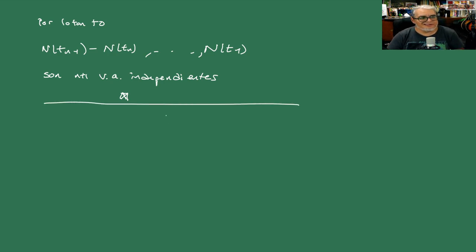Por lo tanto, N de TN menos N de TN-1 hasta N de T1, todas las que nos interesaban, son N más 1 variables aleatorias independientes, que era lo que queríamos probar. Entonces, ahora vamos a dar un par de definiciones que van a cerrar esta parte y empezamos con lo que sigue.